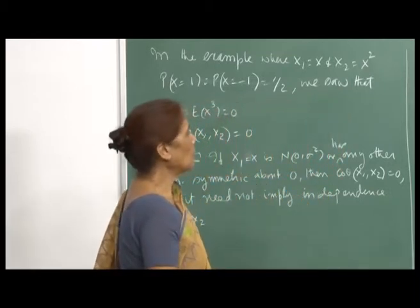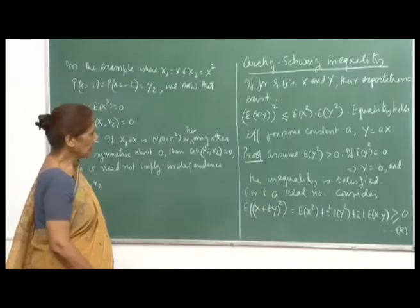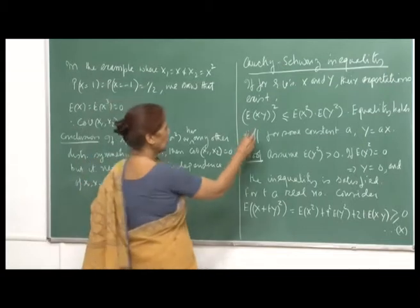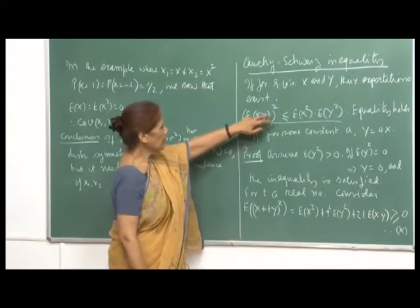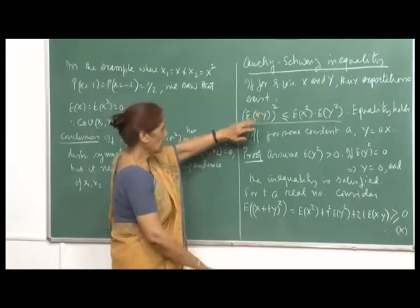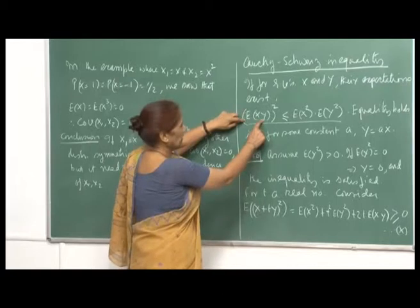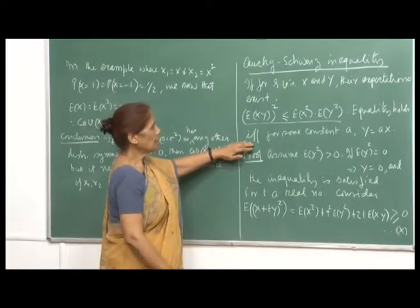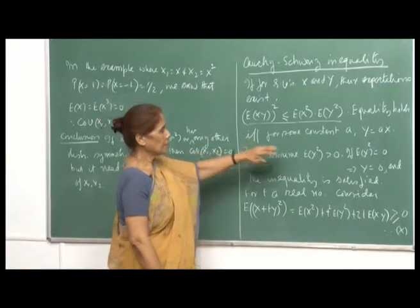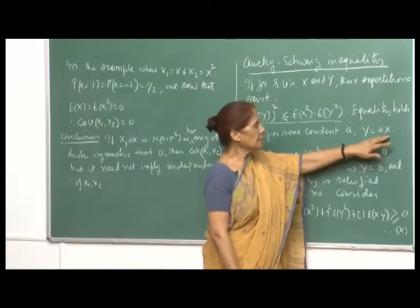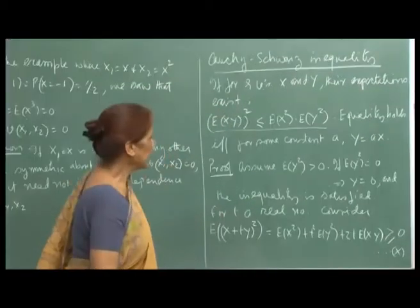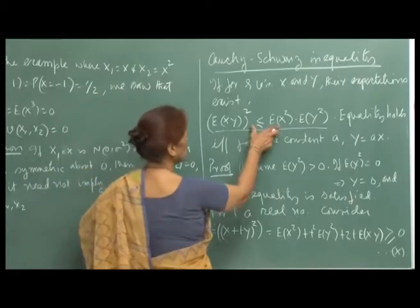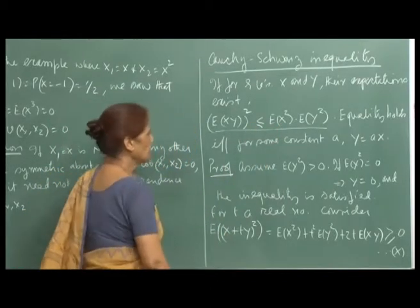Now, a very interesting and powerful inequality: the Cauchy-Schwarz inequality states that [E(XY)]² ≤ E(X²)·E(Y²), provided the expectations exist. Equality holds if and only if Y = aX for some constant a, meaning there is a linear relationship between X and Y. So if X and Y are linearly related, the Cauchy-Schwarz inequality is satisfied as an equality; otherwise it is a strict inequality.